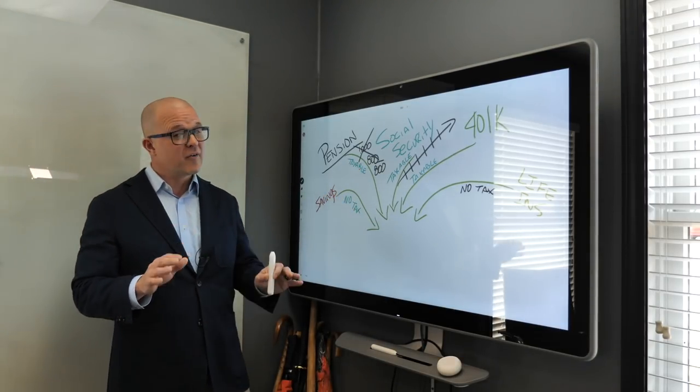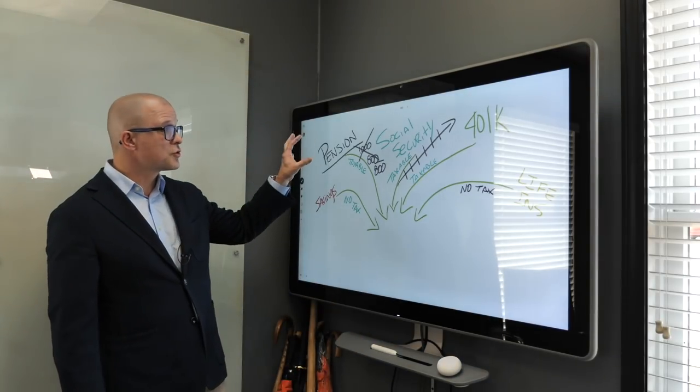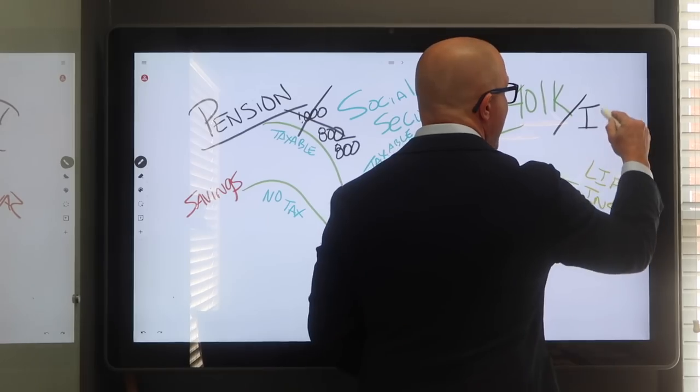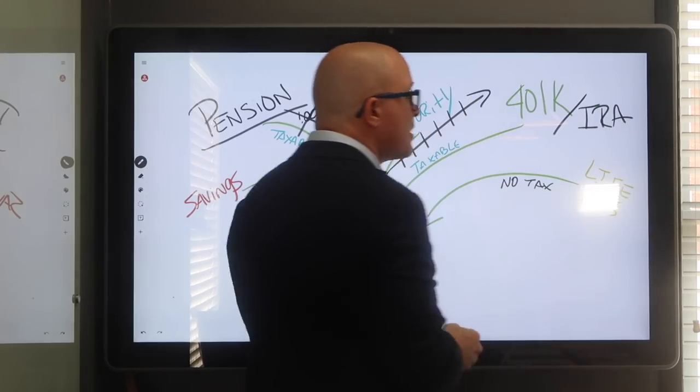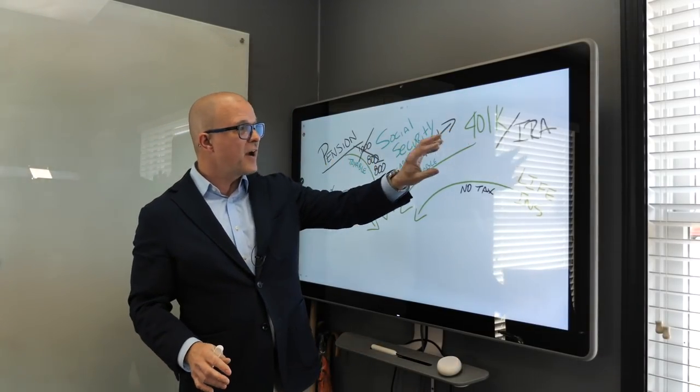Another big piece. Everybody knows. We have to pay taxes on a bunch of this money. Social Security, Pensions, 401Ks, IRAs, 403Bs, 457, all these different numbers. All this fancy stuff is out there.